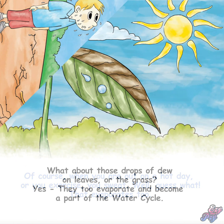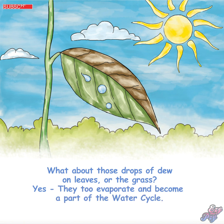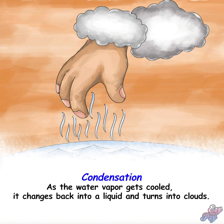What about those drops of dew on leaves or the grass? Yes, they too evaporate and become a part of the water cycle. Condensation: as the water vapor gets cooled, it changes back into a liquid and turns into clouds.